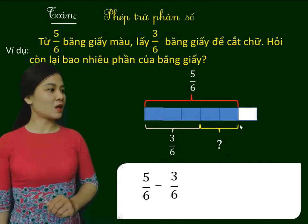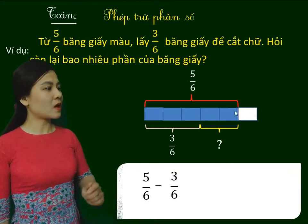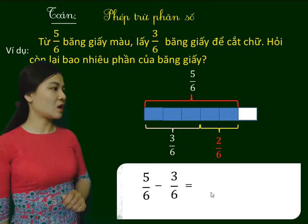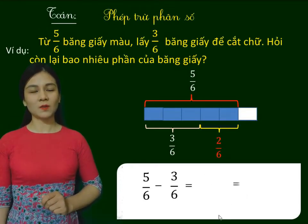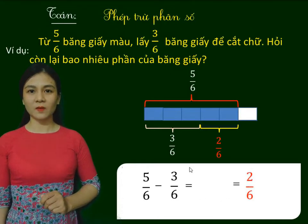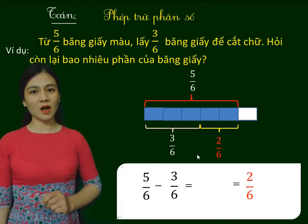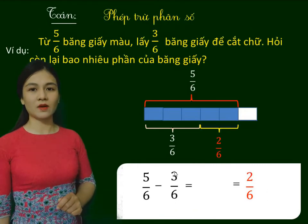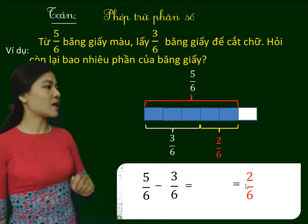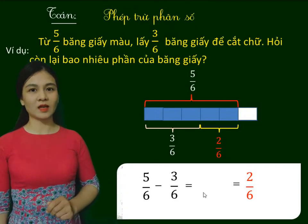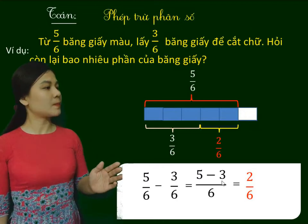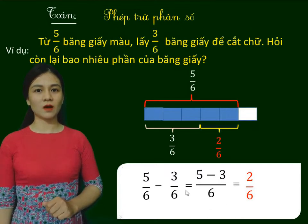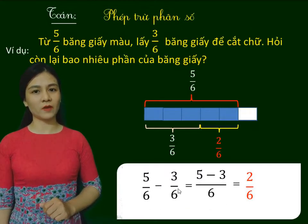Khi quan sát hình vẽ, ta dễ dàng nhận thấy rằng phần băng giấy còn lại bằng 2 phần 6 của băng giấy. Nhưng đấy là khi có hình vẽ, còn trong thực tế, nếu thực hiện phép tính trừ 2 phân số, thì chúng ta làm bằng cách nào? Các em hãy quan sát phép tính và kết quả 2 phần 6. Đối chiếu, chúng ta sẽ thấy rằng số 2 chính là kết quả của phép trừ 5 trừ 3, còn mẫu số là 6, bằng mẫu số của 2 phân số trong phép tính.